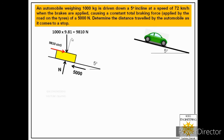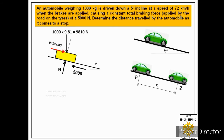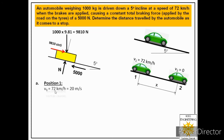We define two positions: position one is when the brakes are applied, and position two is when the vehicle comes to a stop. We need to find the distance x between these two positions. At position one, the velocity is 72 km/h, which we convert to meters per second, giving 20 m/s. At position two, the velocity is zero.